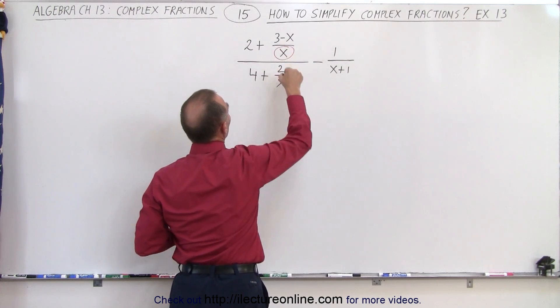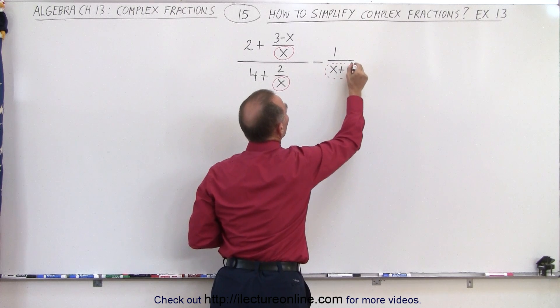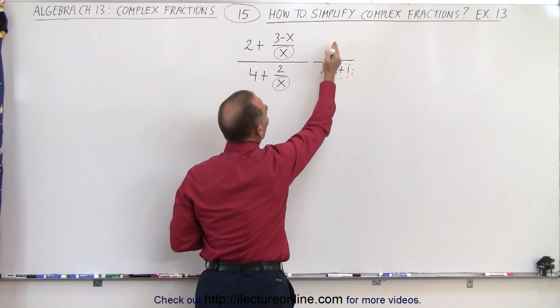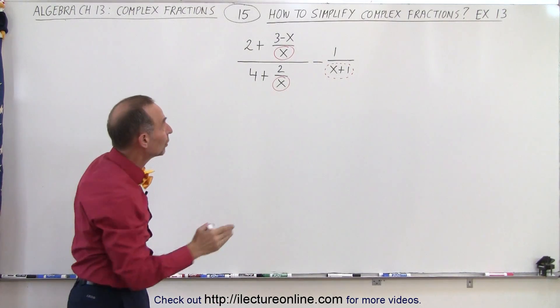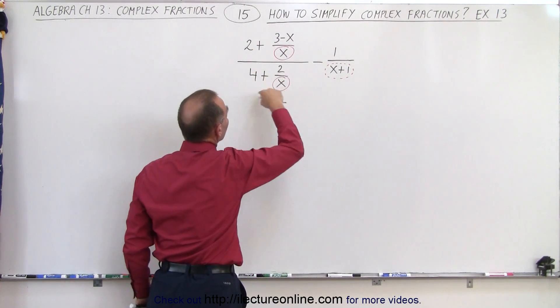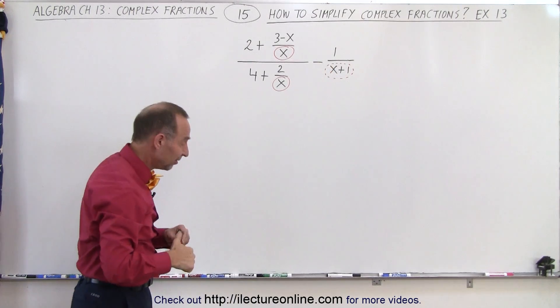We have an x, we have an x, and we have an x plus 1 here. But notice that this is 1 over x plus 1 subtracted from this complex fraction. So what we should do is handle this portion first and then subtract from that 1 over x plus 1.